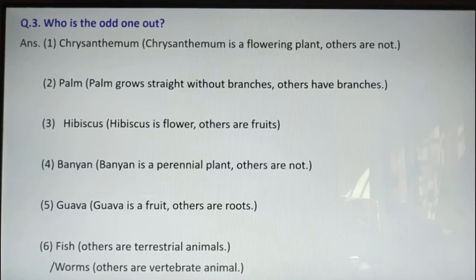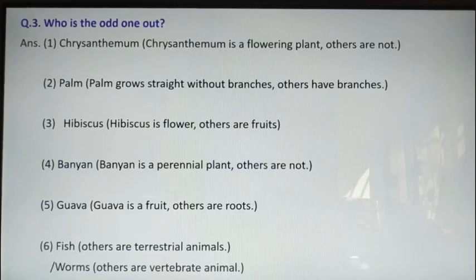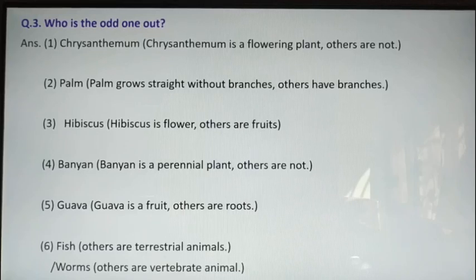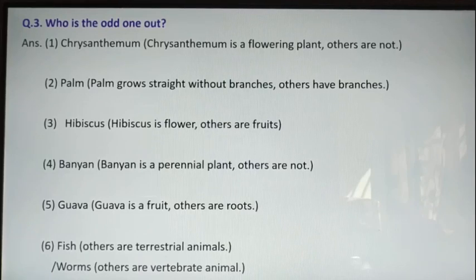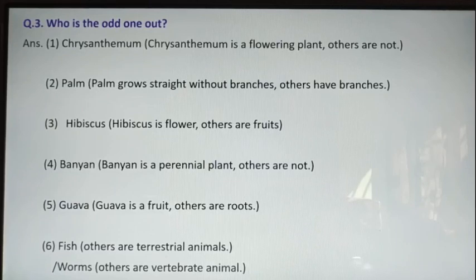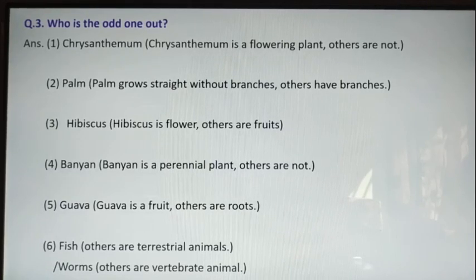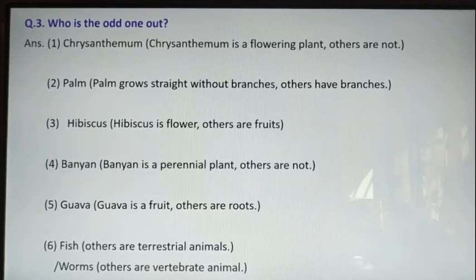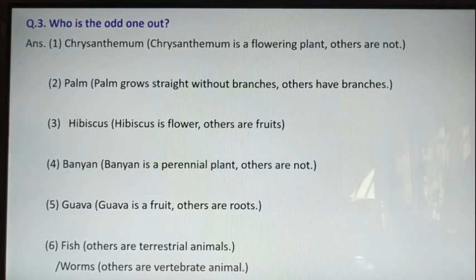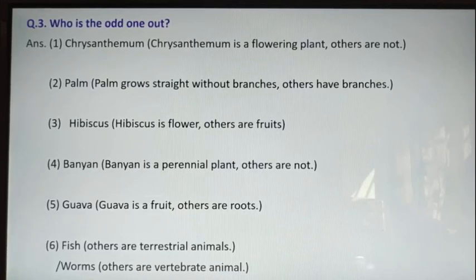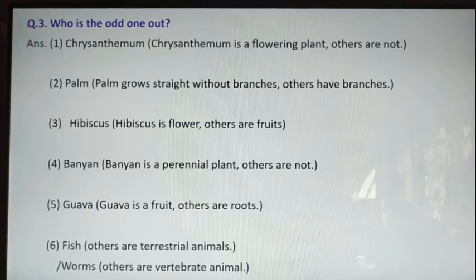Third: grape, orange, lemon, hibiscus — hibiscus is the odd one out. Grape, orange, and lemon are all fruits, while hibiscus is a flower. Fourth: sunflower, banyan, jowar, bajra — banyan is the odd one out. Sunflower, jowar, and bajra are small herbs that live only for one year; opposite to that, banyan is a big tree which lives for many years — it is a perennial plant.